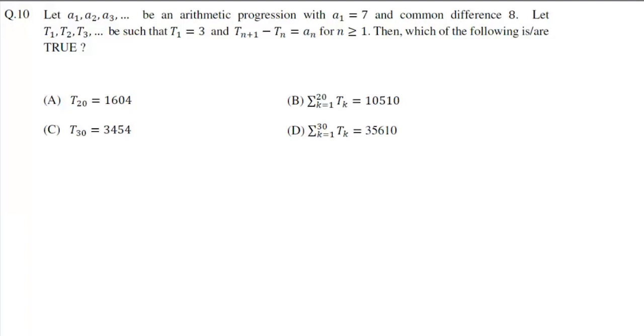In this question we are given an arithmetic progression with first term a₁ = 7 and common difference d = 8. Let T₁, T₂, T₃, ... be such that T₁ = 3 and Tₙ₊₁ - Tₙ = aₙ. We need to determine which of the following is true. We are given that Tₙ₊₁ - Tₙ equals aₙ.